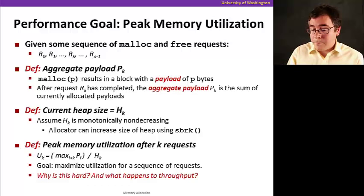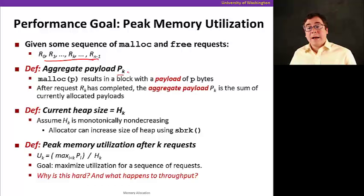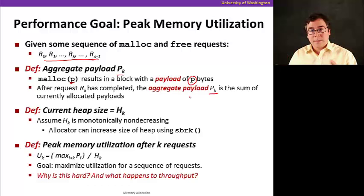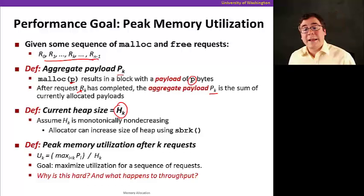The other performance goal of allocators is peak memory utilization. Let me tell you what it is now. So again, we have our sequence of requests from R0 to Rn-1. And the aggregate payload PK is the total useful memory provided by the malloc blocks. So that's the payload P of a malloc block is the number of bytes requested by the application. So the aggregate payload PK is the total number of bytes that malloc provided by the application at request RK. And now we define the heap size, the current heap size as HK, and it's monotonically non-decreasing, means it only grows as we need more heap space. And this is done with a system called sbrk, as I mentioned before.